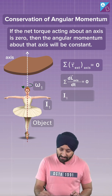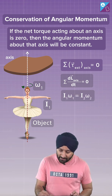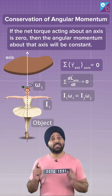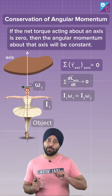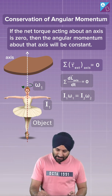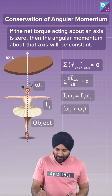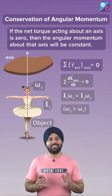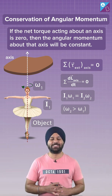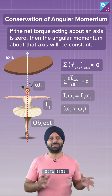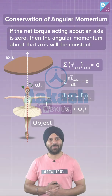So we can say that I1 omega 1 equals I2 omega 2. If I2 decreases, then omega 2 increases, meaning omega 2 is greater than omega 1. So by folding her hands, she can increase her speed, and vice versa is also true.